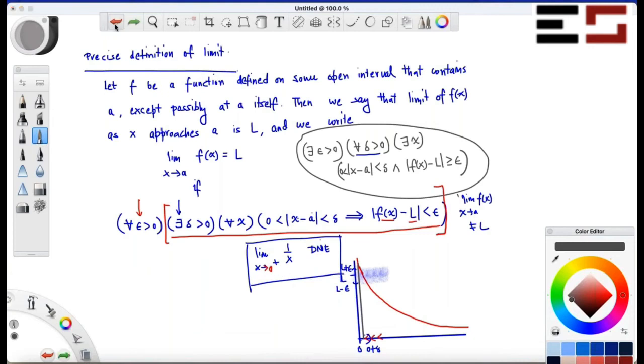And this is true for any delta positive. Do you agree? Even if I choose a smaller delta, I will be able to choose a point which is close to zero whose image is greater than L plus epsilon. I can always do that, right?